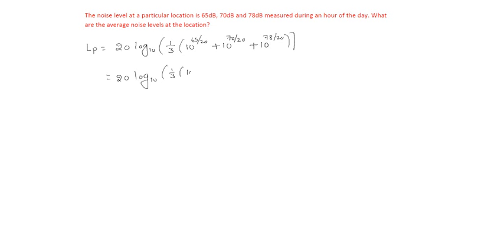1/3 of (10 power 3.25 plus 10 power 3.5 plus 10 power 3.9), which is equal to 20 into log of 1/3 into (10 power 3.25 plus 10 power 3.5 plus 10 power 3.9), which is 72.66 decibels as the average.